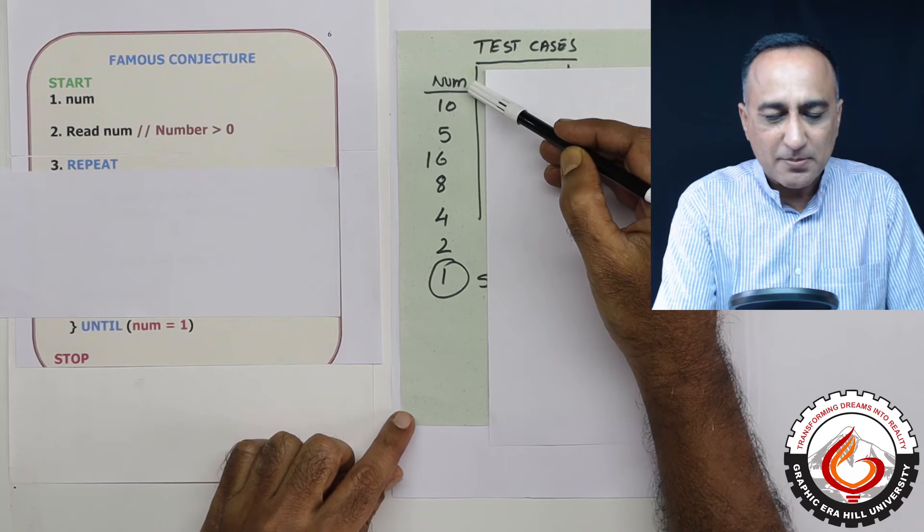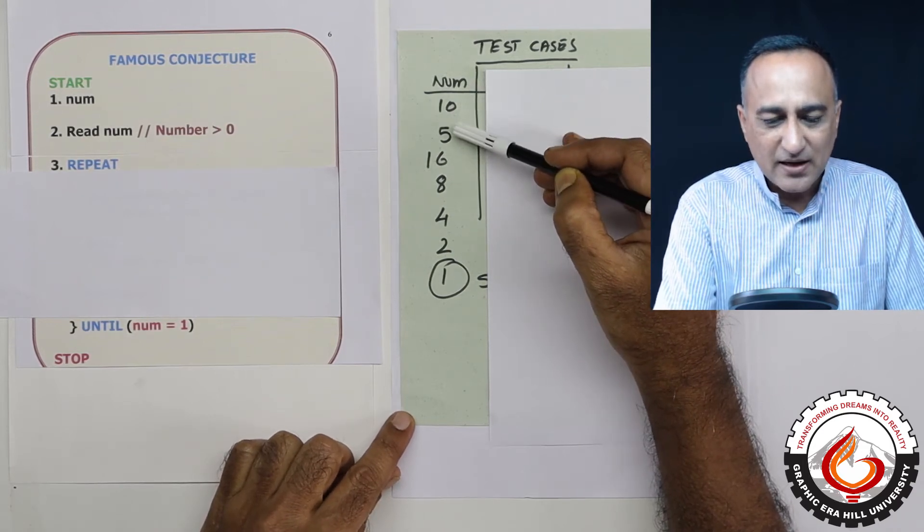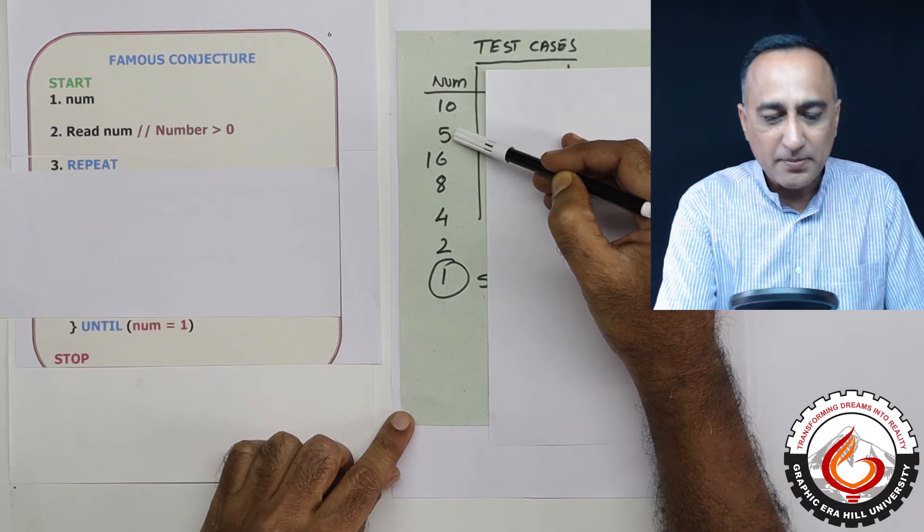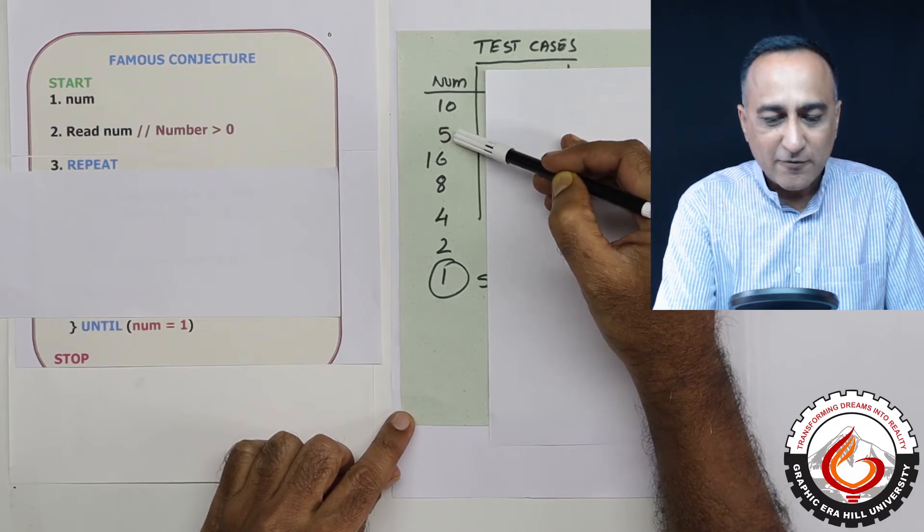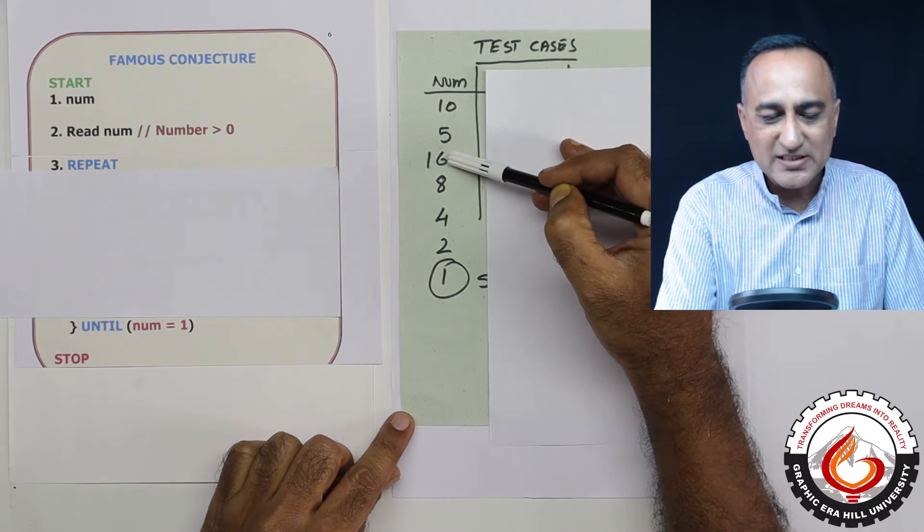Take an example of this number. This number here is 10. Since it is even, I am dividing it by 2, it becomes 5. 5 is odd, so I am multiplying it by 3 and adding 1. So it is 5 times 3 is 15 plus 1 is 16.